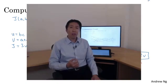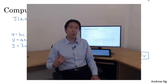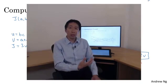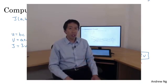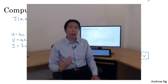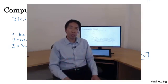So to recap, the computation graph organizes the computation with this blue arrow left to right computation. Let's defer to the next video, how you can do the backward red arrow right to left computation of the derivatives. Let's go on to the next video.